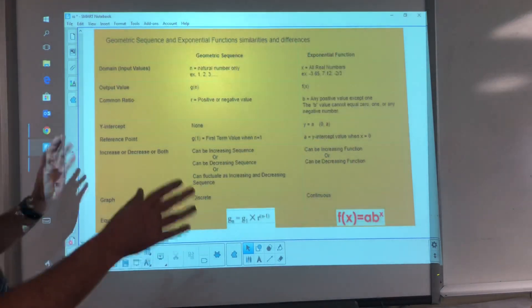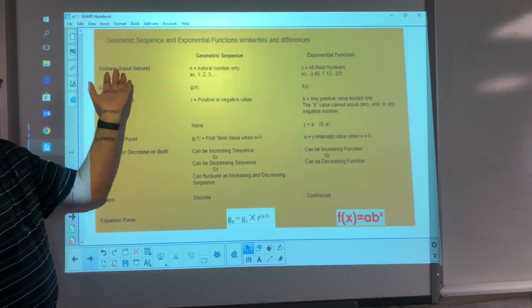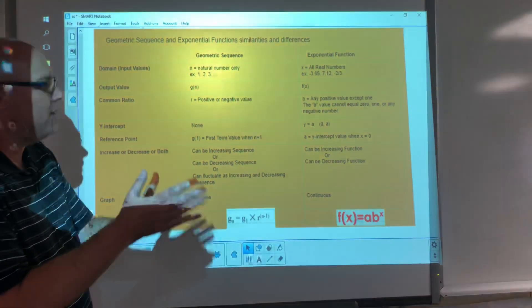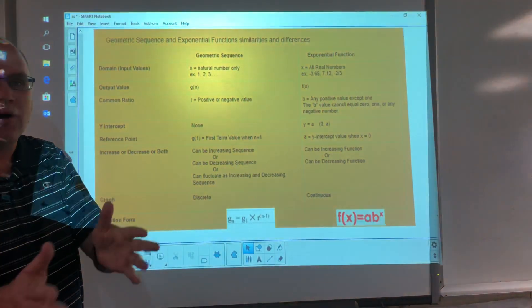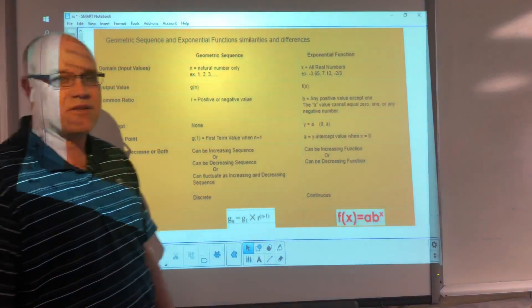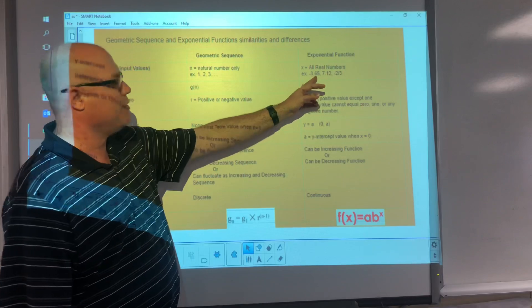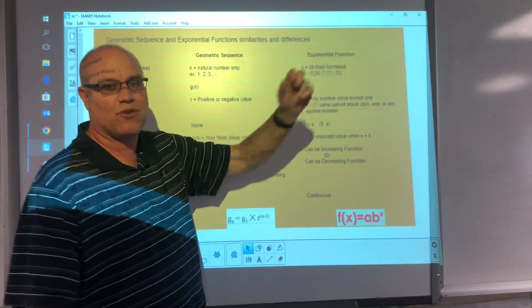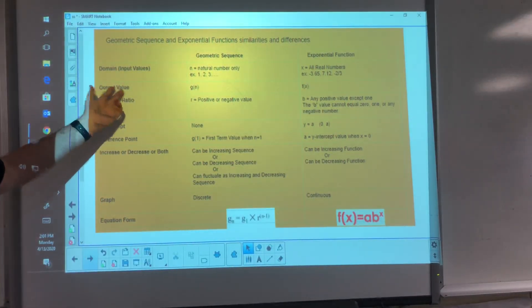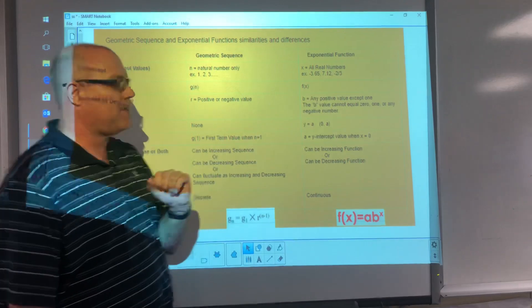All right. So now let's look at some of the similarities and differences. Geometric sequences versus exponential functions. Domain, the input values. Geometric sequence, it's our n is our natural numbers. When you first learn how to count when you're a baby, right? One, two, three, four. Doesn't include zero. There's no zero. Starts with one, just the natural numbers. For exponential functions, the input values, the x value could be any numbers. All real numbers. So it could be negative 3.675. It could be 7.12. It could be negative two-thirds. All real numbers are good for the input value for exponential functions. The output value, it's the g of n with our geometric sequences. For exponential functions, it's going to be f of x.